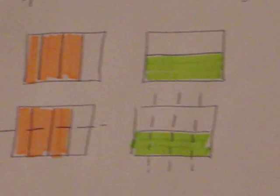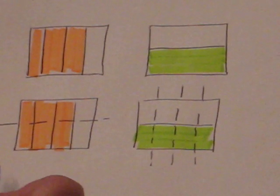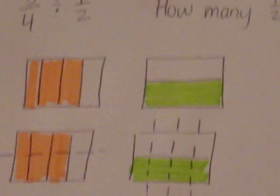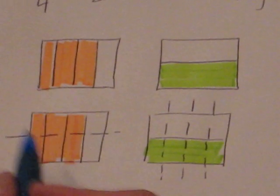Alright, so now we can create equivalent fractions with fractions with the same denominator. This one has now gone from three-fourths to six-eighths. The half is now four out of eight.